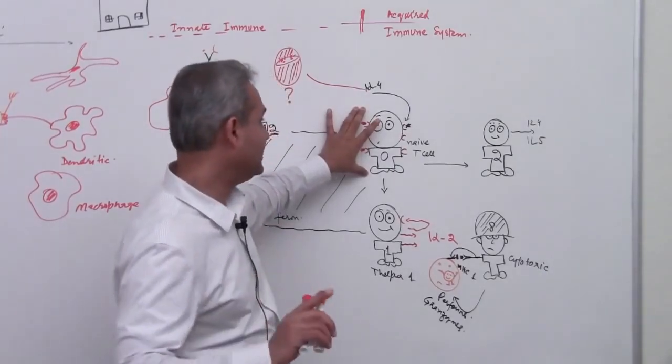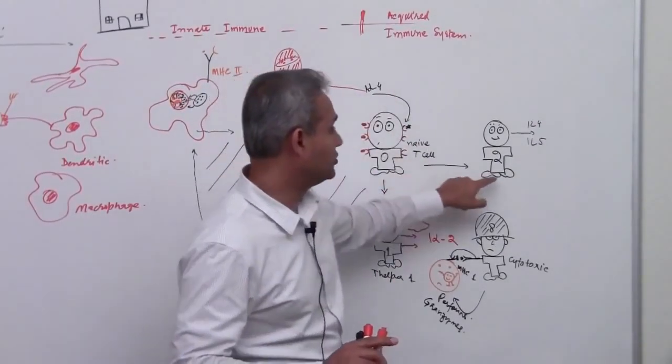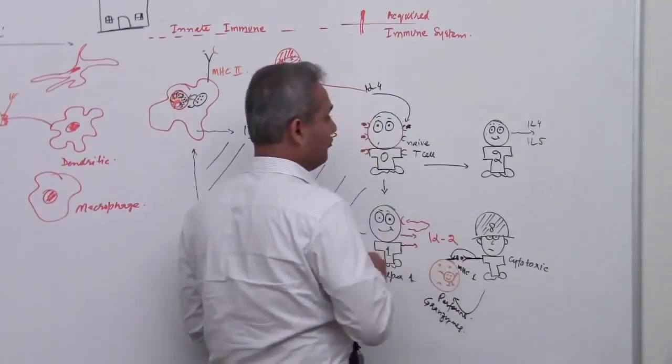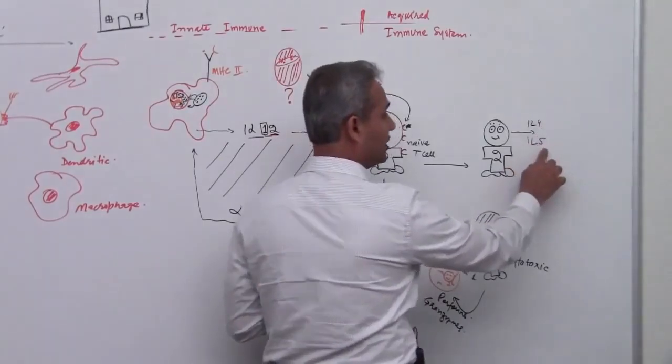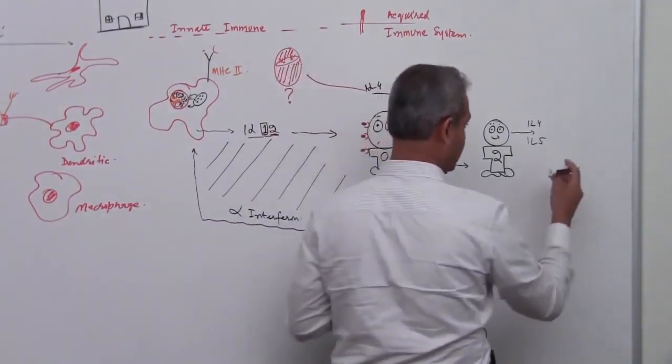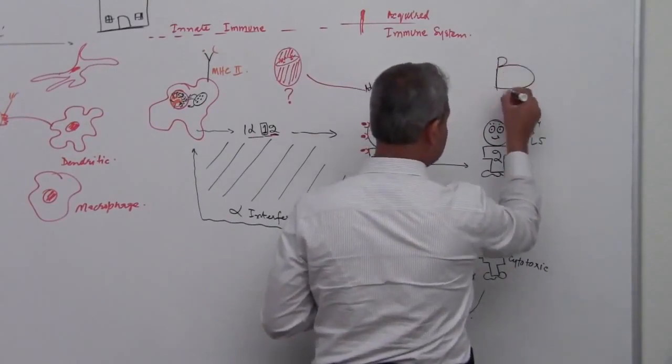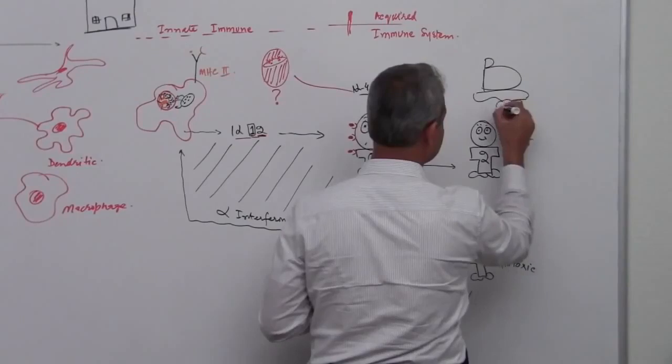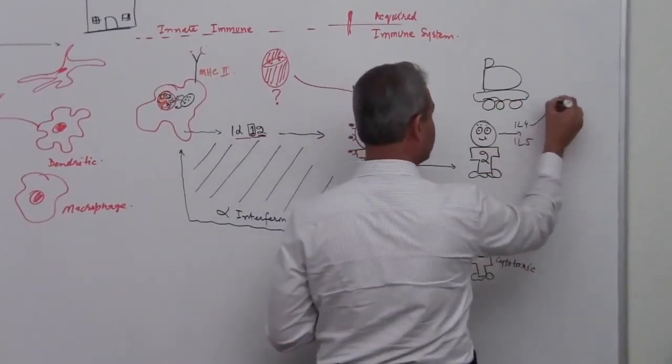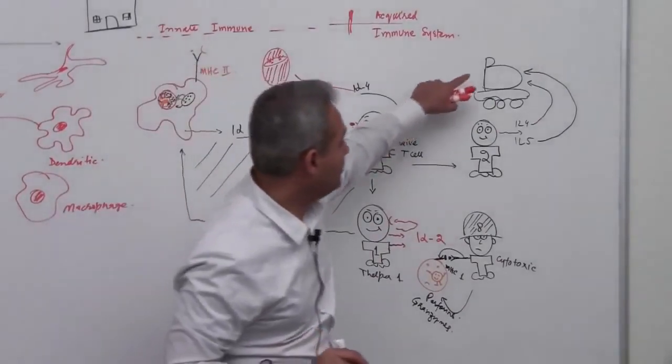That naive T helper cell would be converted as a result of IL-4 into a T helper 2 cell. The T helper 2 cell then will secrete IL-4 and IL-5. These guys in the T helper 2 would then be working with B cells. So I'm going to be secreting IL-4 and 5 which are going to act on the B cell. And this guy is going to be working with the B cell.